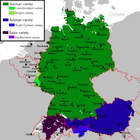It is a pluricentric Dachsprache with three codified specific regional variants: German Standard German, Austrian Standard German, and Swiss Standard German. Regarding spelling and punctuation, a recommended standard is published by the Council for German Orthography, which represents the governments of all majority and minority German-speaking countries and dependencies.